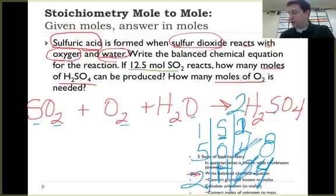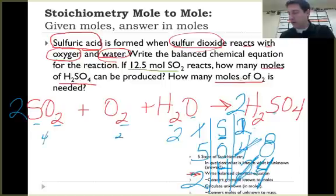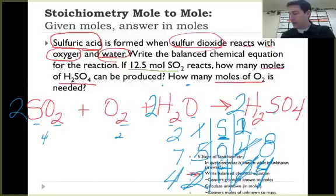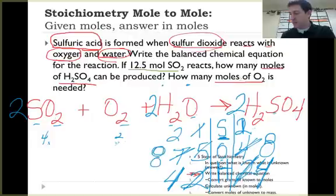Two times four is eight. I go back to sulfur — I need more sulfur on the reactants side, so I put a two in front of SO2. That gives me two sulfur. Now I have two times two equals four oxygens from SO2, two from O2, and one more from water — four plus two plus one gives me seven, which isn't enough. I need eight. If I put a two in front of water, that changes hydrogens to four and adds two more oxygens: four plus two plus two gives me eight. Now I've got my balanced chemical equation.